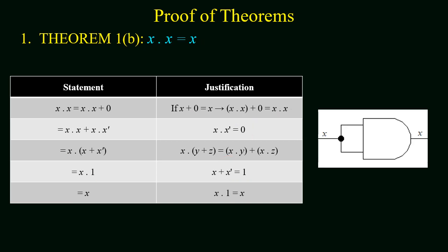The next theorem states x · x = x. In hardware realization, a two-input AND gate with both inputs common gives an output equal to the input. The proof: x · x = x · x + 0. Replacing 0 with x · x', and applying distributive law gives x · (x + x'). Since x + x' = 1, we get x · 1 = x, hence the theorem is proved.